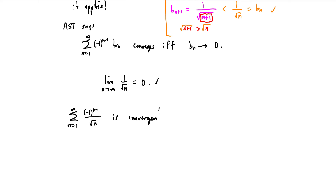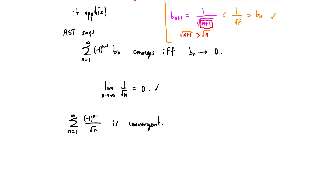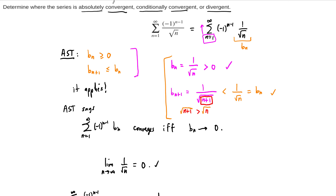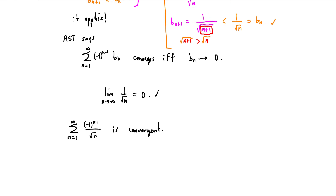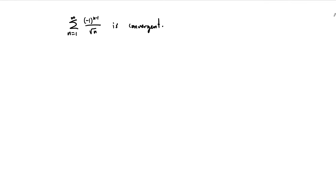Now, this doesn't fully answer the question, because we were asked whether the series is absolutely convergent, conditionally convergent, or divergent. At this point, we can cross off divergent — it's going to be one of these two flavors of convergent. The next step is to check whether it's absolutely convergent, because that's how conditionally convergent is defined: if it's convergent but not absolutely convergent, then it's called conditionally convergent.